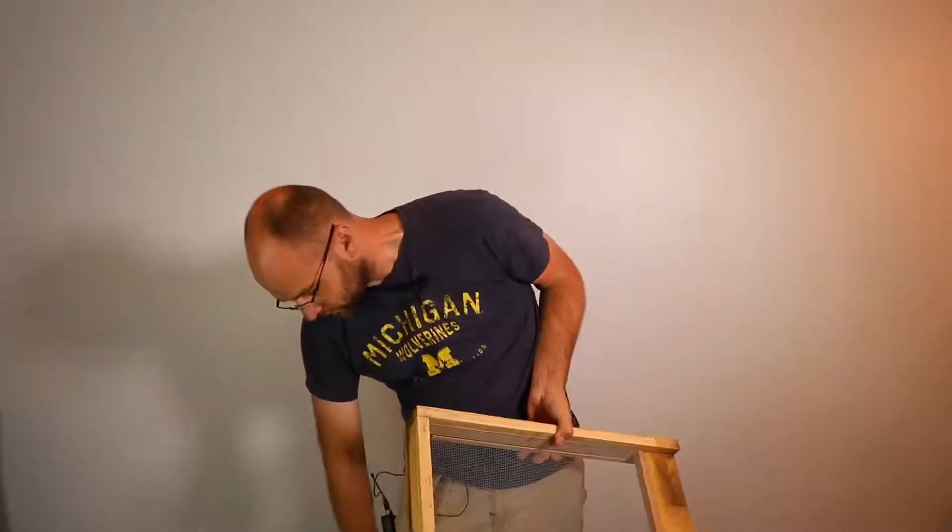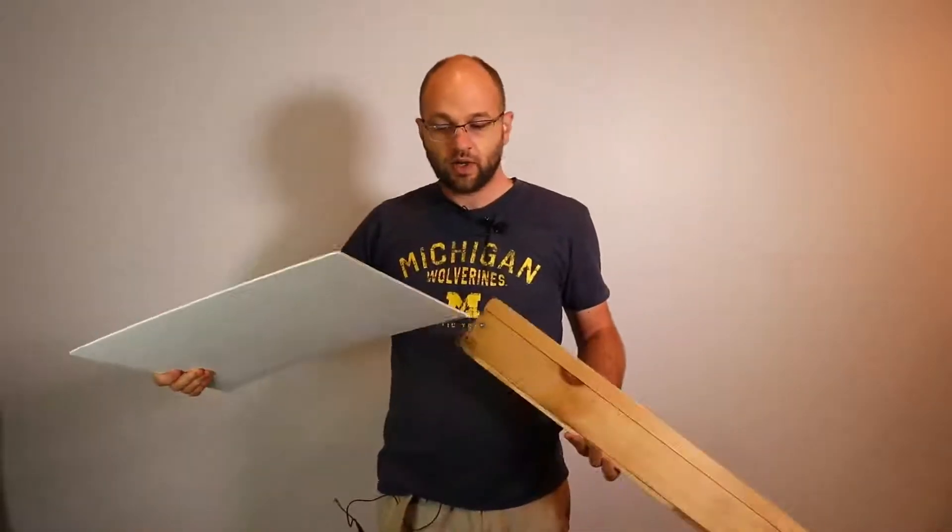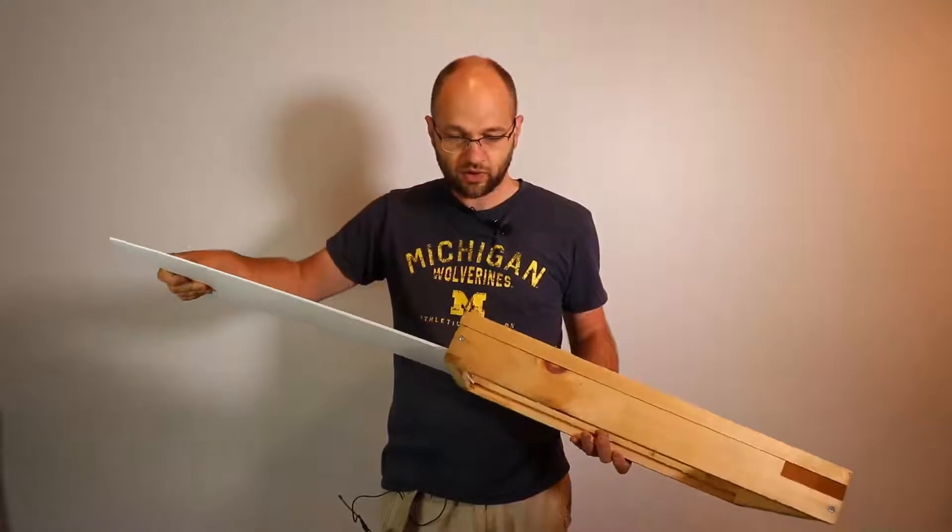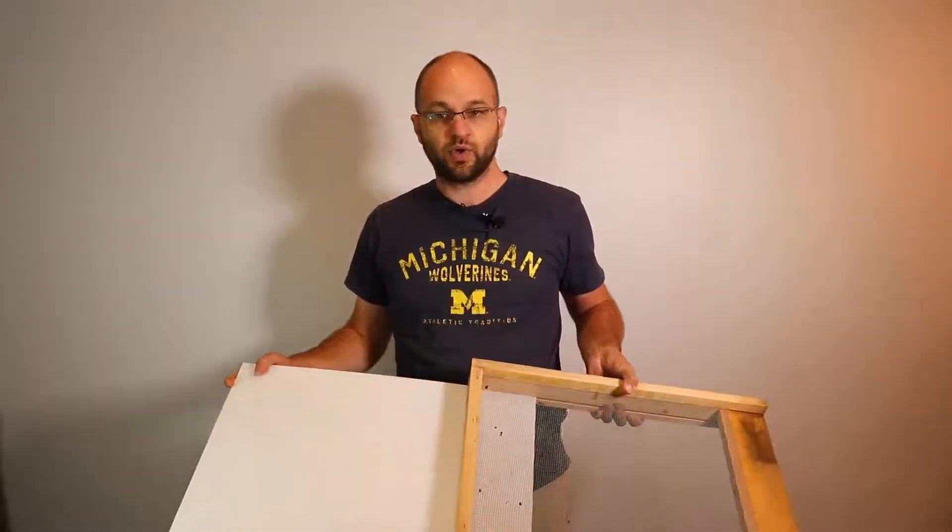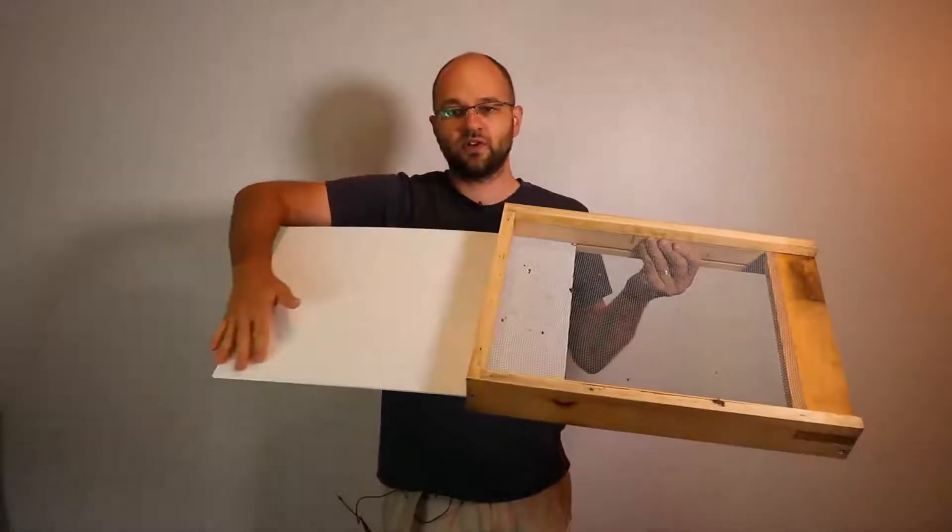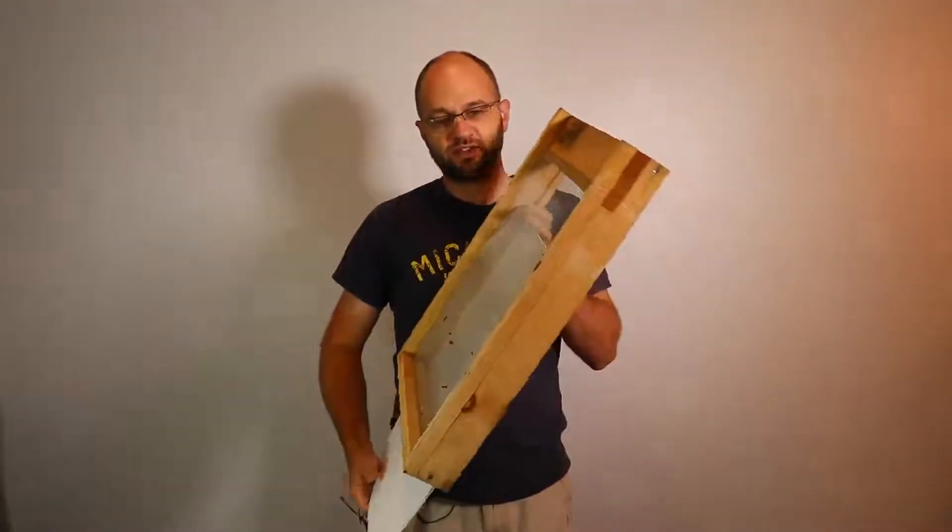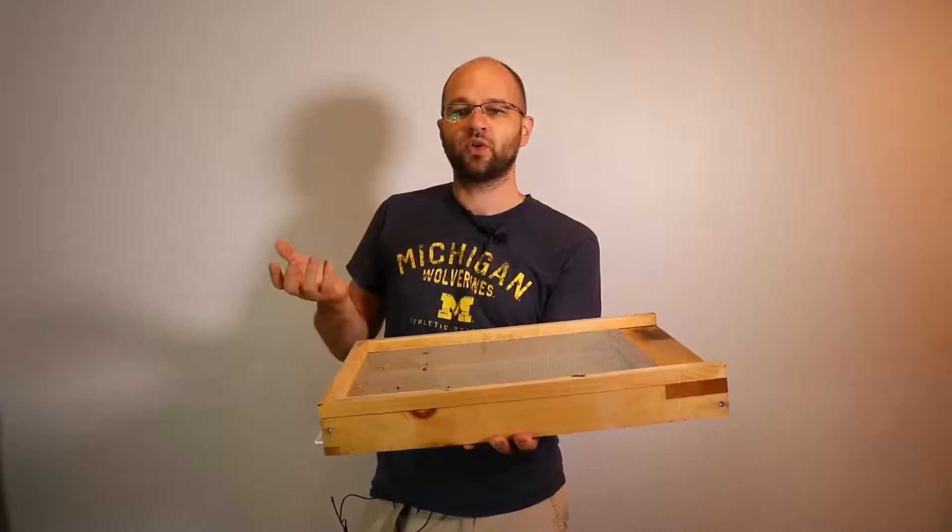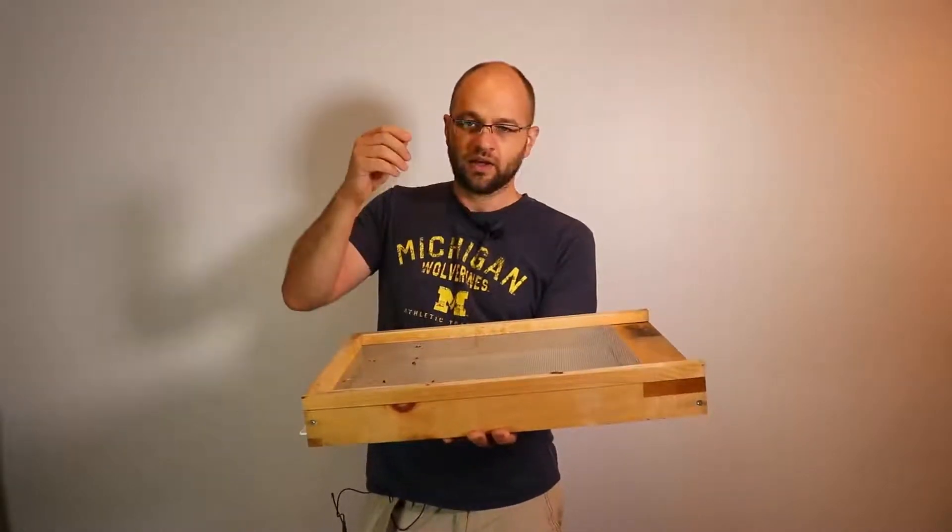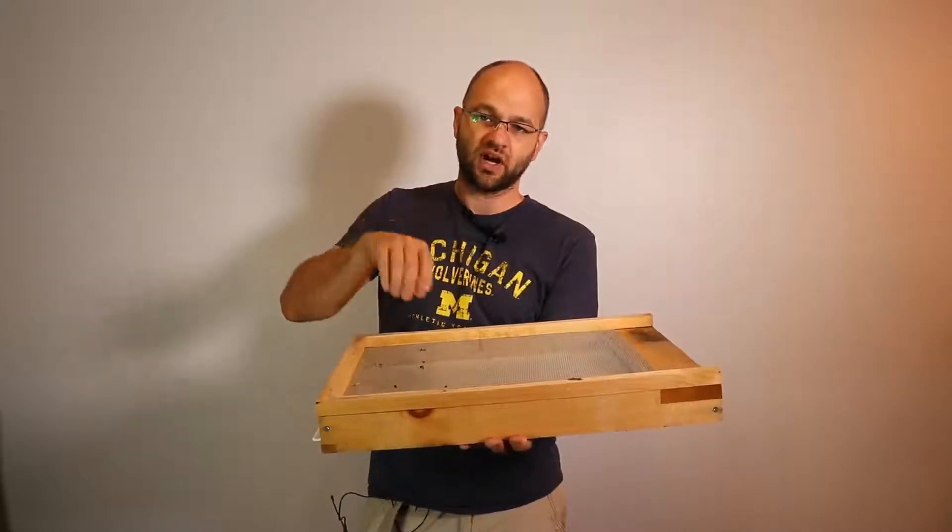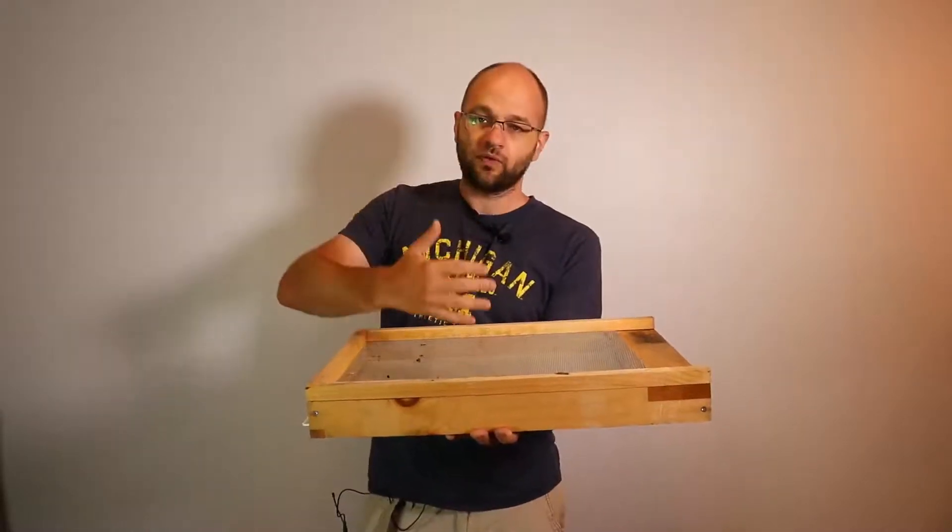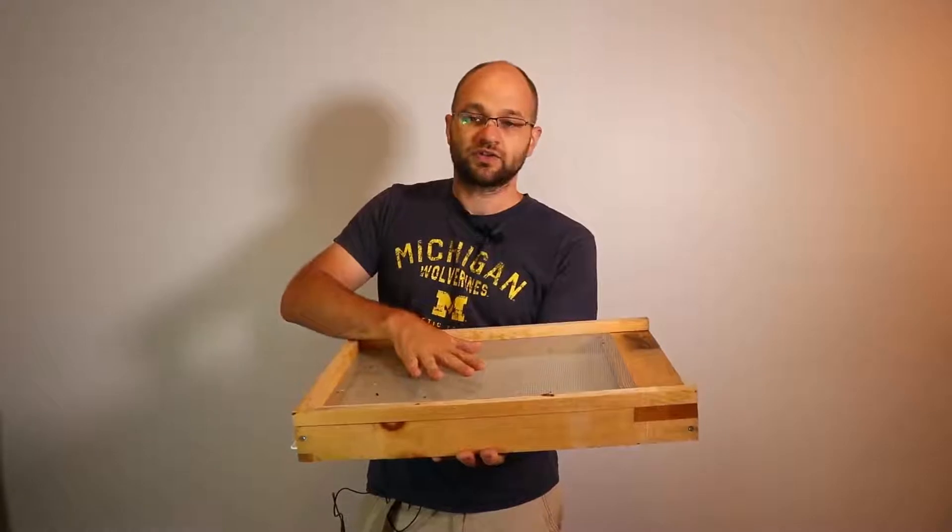A lot of people use it for varroa mite control and for hive beetles. You can put this insert in. On this insert, you put Crisco. Slide this in. During part of the normal activity in a hive, some of the mites will get knocked off from the bees or they'll get knocked off from the comb and they will fall down.